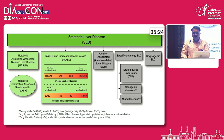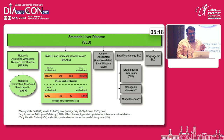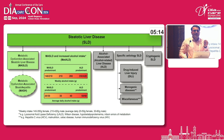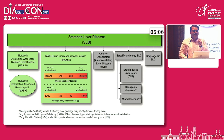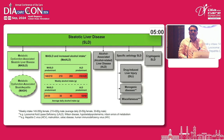The new classification includes MASLD, MetALD, alcoholic liver disease, specifically-etiology steatotic liver disease, and cryptogenic SLD. When alcohol consumption is between 20–50 grams per day for females and 30–60 grams for males, that is the MetALD component. More than 50 grams for females and more than 60 grams for males is alcoholic liver disease. Less than 20 grams for females and less than 30 grams for males falls under pure MASLD.